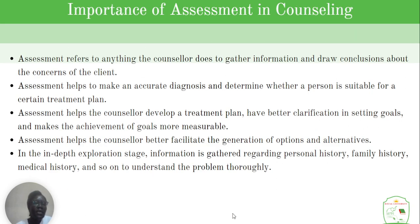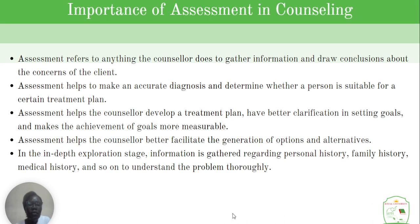The intervention stage in counseling has three steps: summarizing the problem, identifying a strategy, and selecting and implementing an intervention. The problem is summarized using four-dimensional analysis, which includes affective, behavioral, cognitive, and interpersonal/systematic components. The counselor identifies a strategy consistent with the goals and the client's characteristics, then selects and implements an intervention best suited for the client and the problem they are facing.